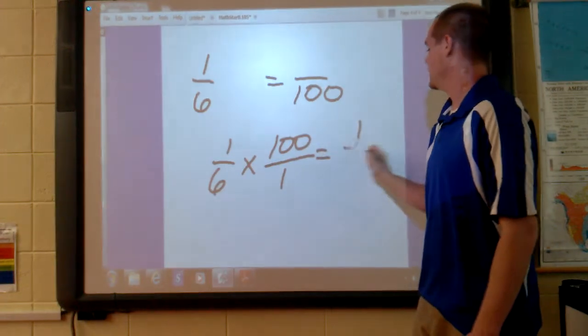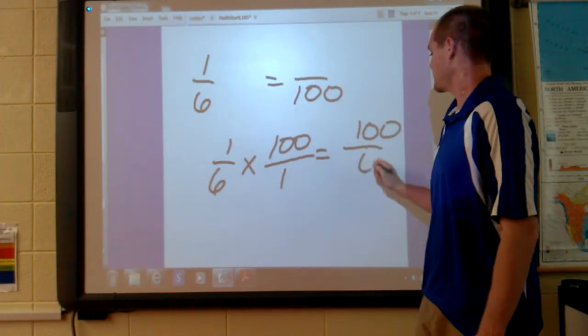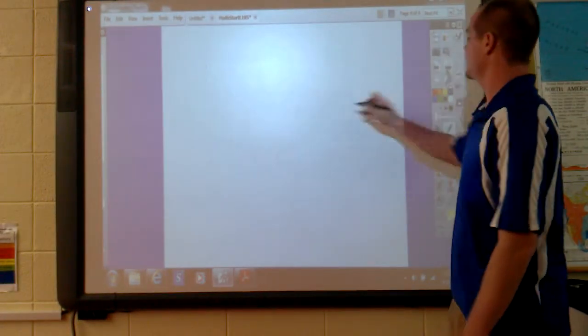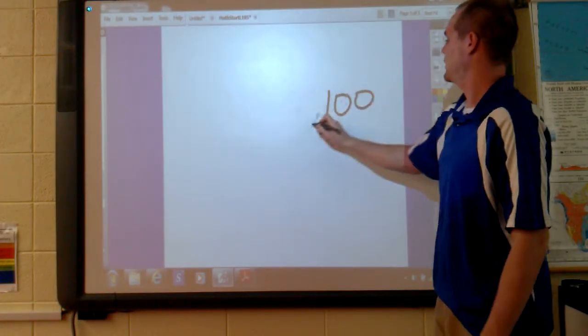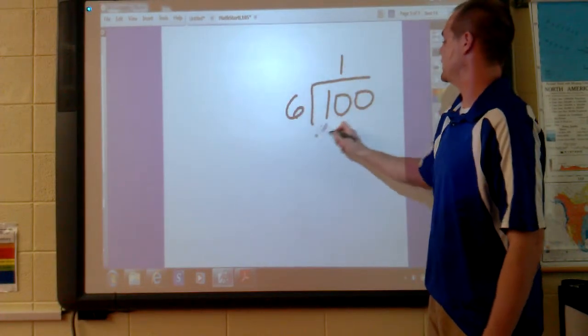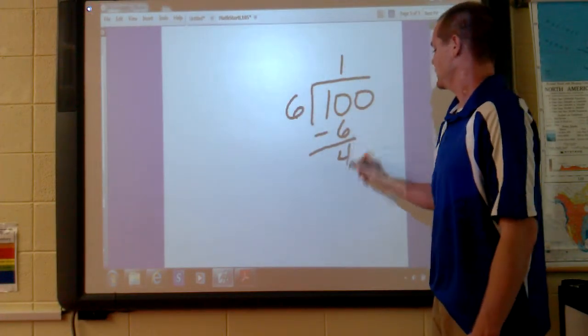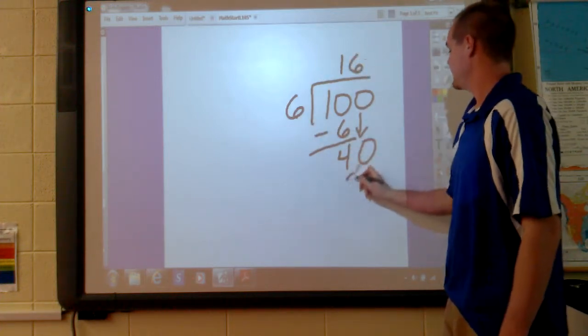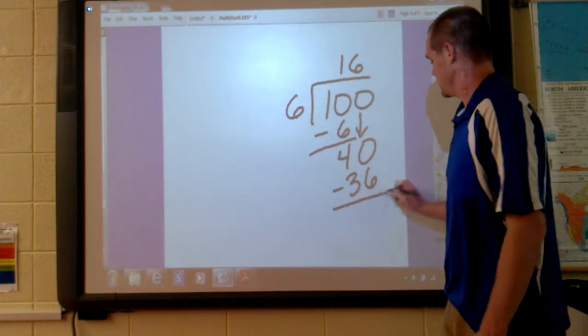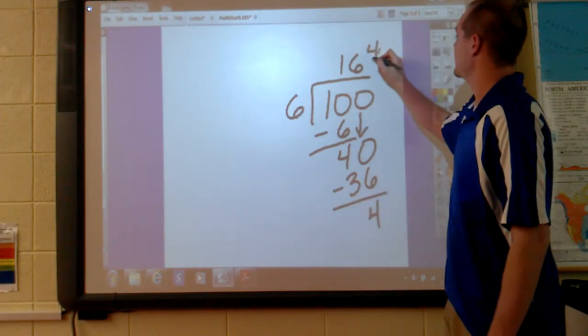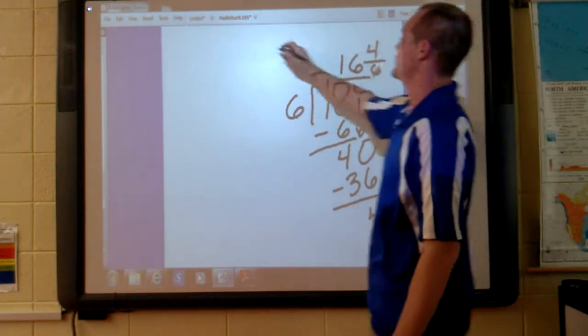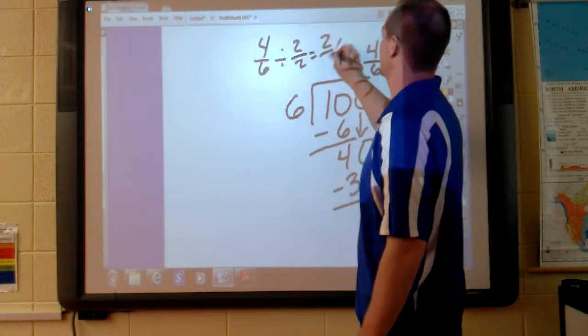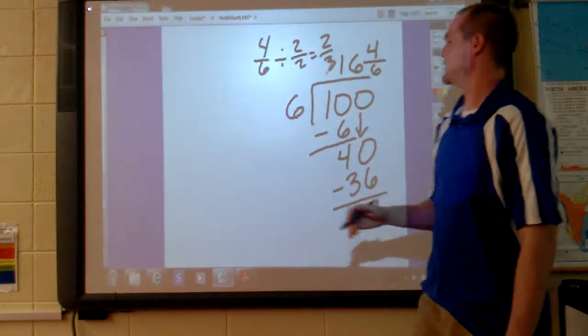We multiply 100 over 6. We know now that we need to divide 100 by 6. 6 times 1 is 6. 6 goes into 40. We end up with a remainder of 4/6. I'm going to reduce this fraction 4/6. So it equals 16 and 2/3.